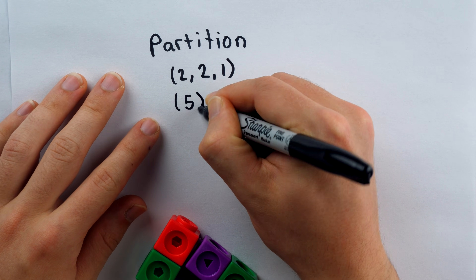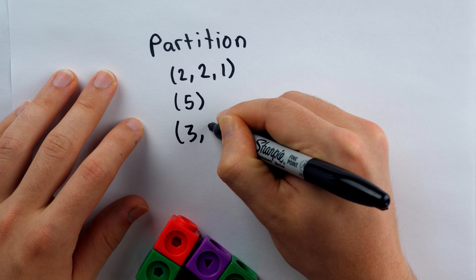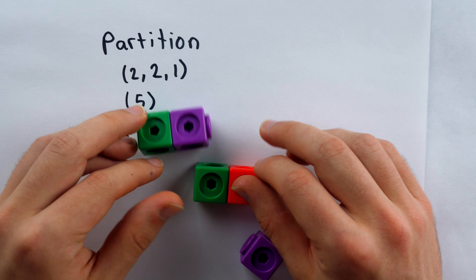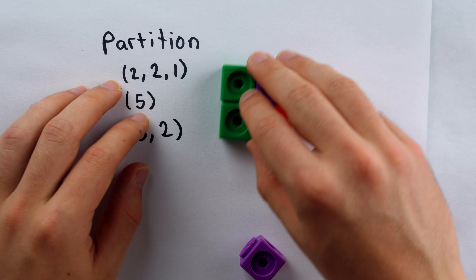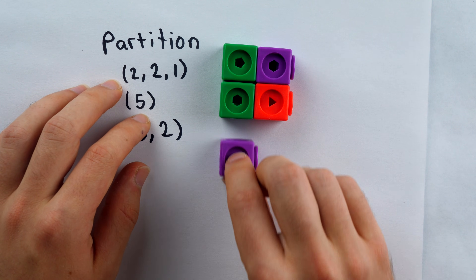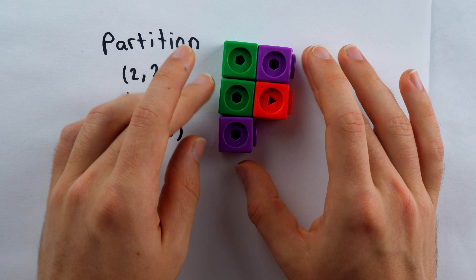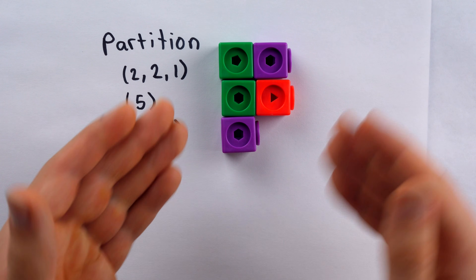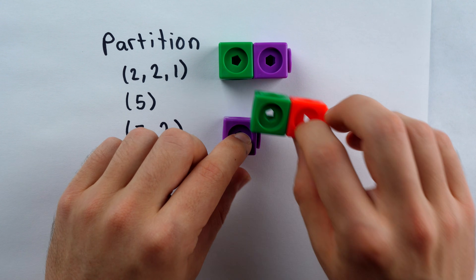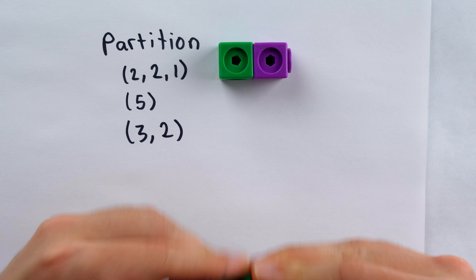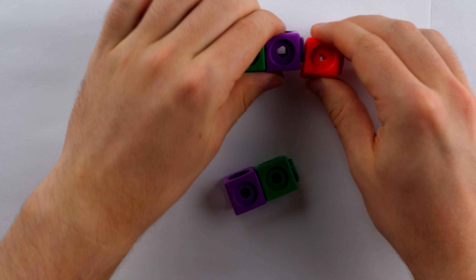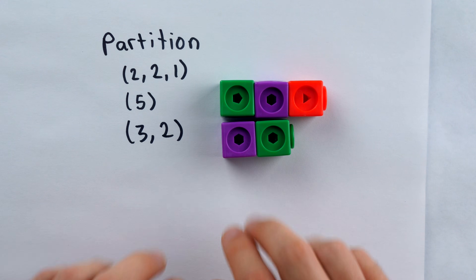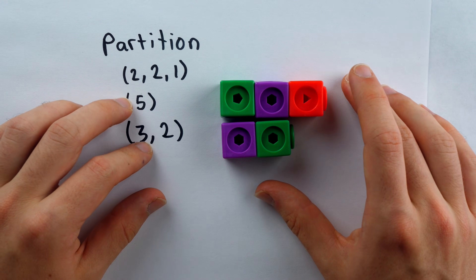We already looked at the partition that's just five, and we also looked at the partition (3, 2). I've just been tossing these blocks around. But if we use the blocks to represent a partition in a more orderly way, where we have the larger parts on top and the smaller parts on bottom, it would look like this in the case of (2, 2, 1), or like this in the case of (3, 2).